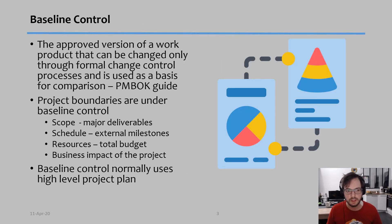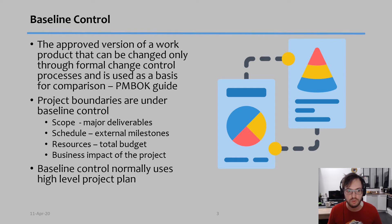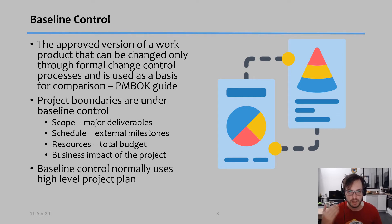One of the things we start with is to talk about our baseline plan — our original plan. Baseline control is the approved version of a work product that can be changed only through formal change control processes, and is used as a basis of comparison. This is our original plan and it's the one that we're going to compare our actual performance to, so it is a very important document.